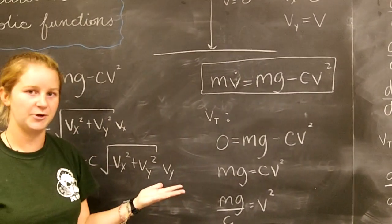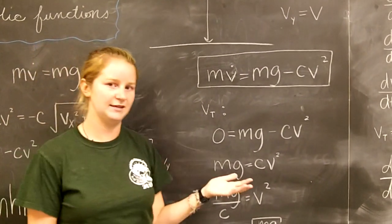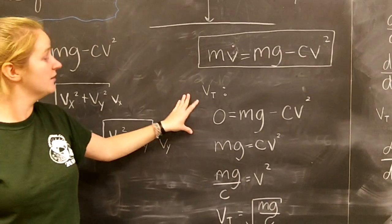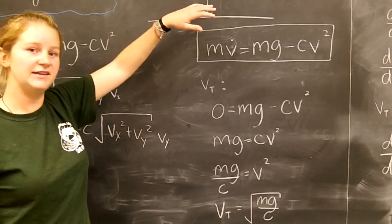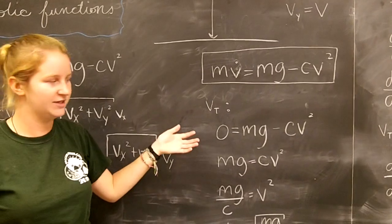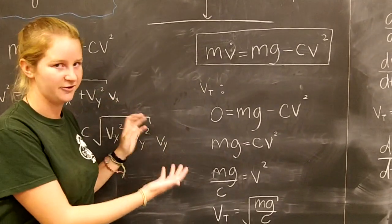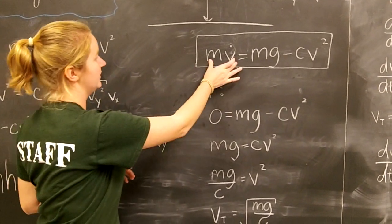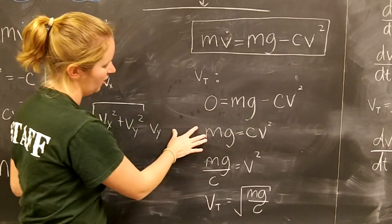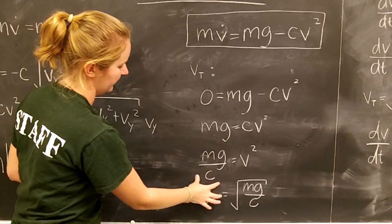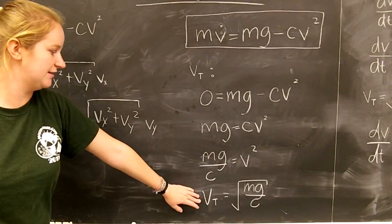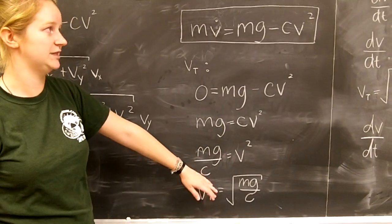So the first thing that we're going to find is the terminal velocity because it will eventually hit that terminal velocity. And terminal velocity occurs when your drag force up is equal to the force going down, in this case gravity. That's why there's zero acceleration. So we can set the mv dot to zero. And then you can just bring the mg over, divide by the C, and solve for v. And you get that the terminal velocity is just the square root of mg over C.